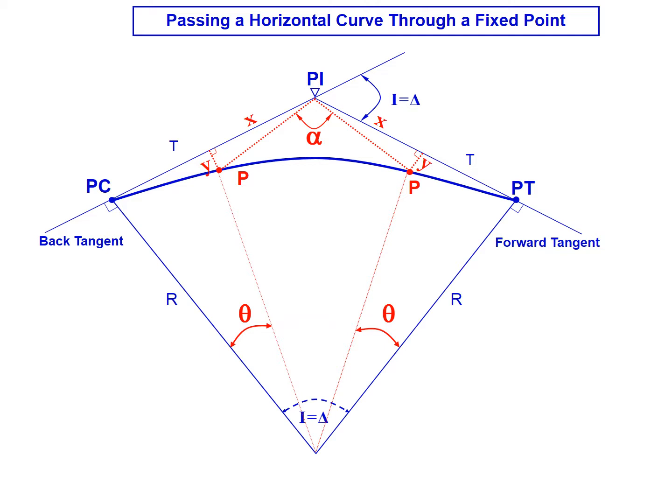We're interested in those points P, which are defined or bounded by the distance along the tangent X. So that's the distance starting at the PI, moving until we reach a point that's perpendicular to the point of interest P. That perpendicular distance is Y. And again, the distance along the tangent is X.